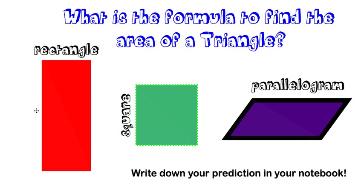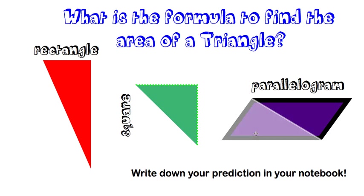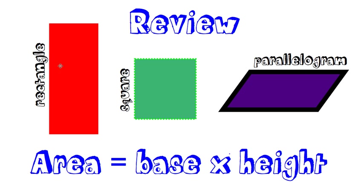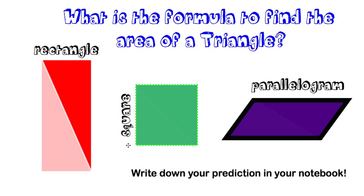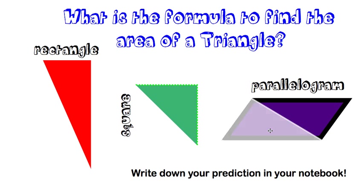Looking at these shapes, if we're chopping off half of each of them to get a triangle, I would like you to write down in your notebook your prediction as to what the formula is to find the area of a triangle. If for these shapes it's base times height, what would it be for triangles if we're just chopping a rectangle, square, and parallelogram in half? Write your prediction down in your notebook now.